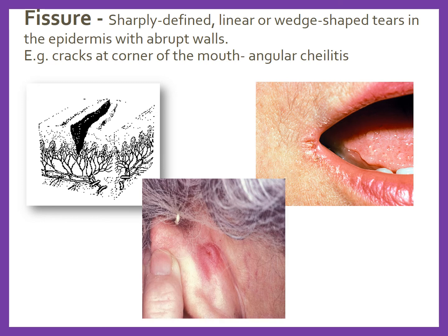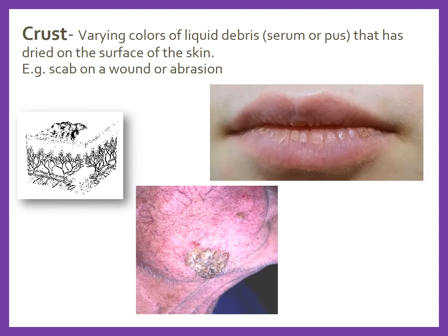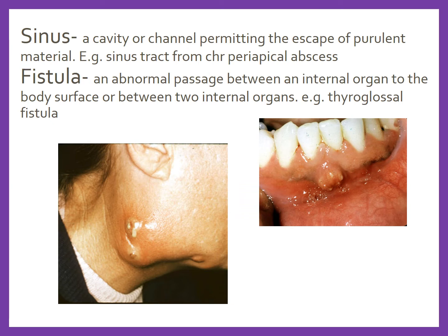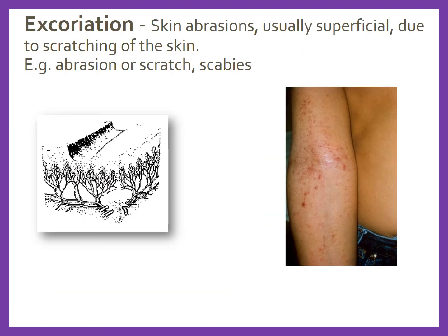A fissure is a sharply defined linear or wedge-shaped tear in the epidermis with abrupt walls; cracks at the corner of the mouth are called angular cheilitis. Crusts are dried liquid debris, serum, or pus on the skin surface, for example a scab on a wound. A sinus is a cavity or channel permitting escape of purulent material, such as a sinus tract from chronic periapical abscess. A fistula is an abnormal passage between an internal organ and the body surface, or between two internal organs. Excoriations are superficial skin abrasions due to scratching.